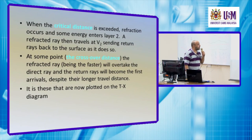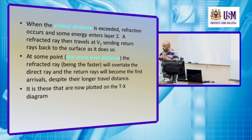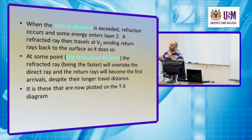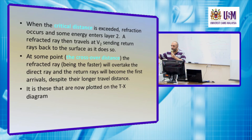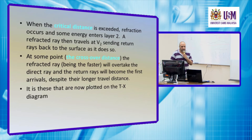When the critical distance is exceeded, refraction occurs. At x equals zero and at shorter distances, we do not usually observe refraction energy, because it takes more time to arrive at the geophone and because of the critical angle condition. So after a certain distance, before the crossover distance — called the critical distance — the refracted energy is not present. At the critical distance it begins to be visible on our record.